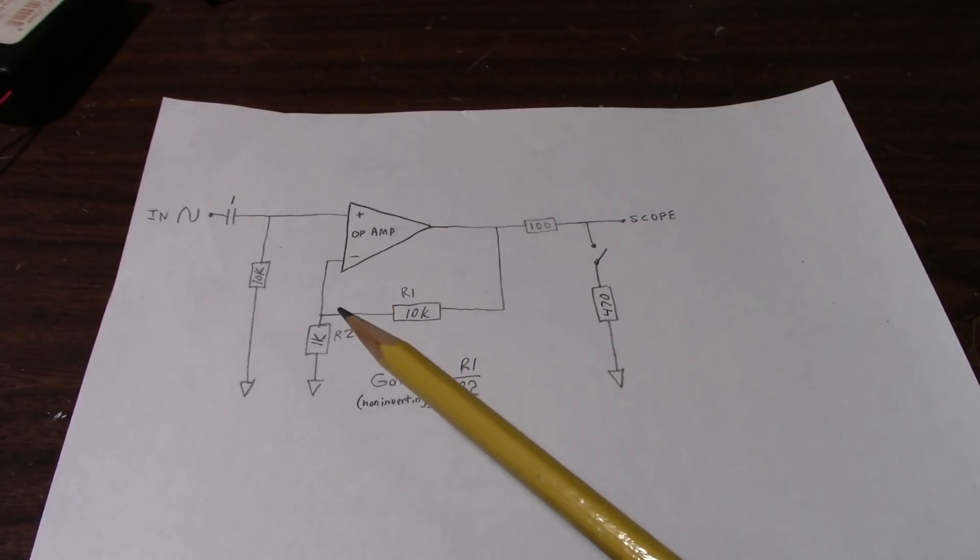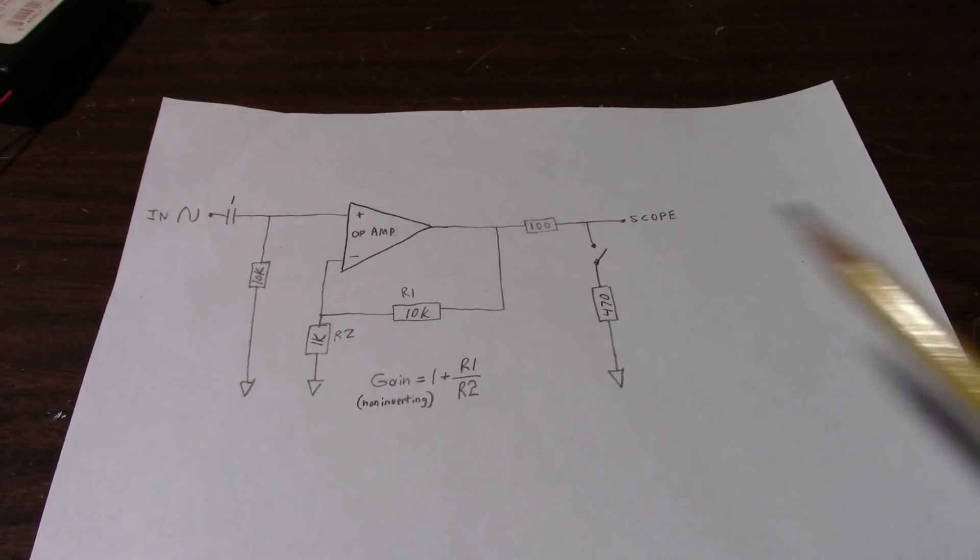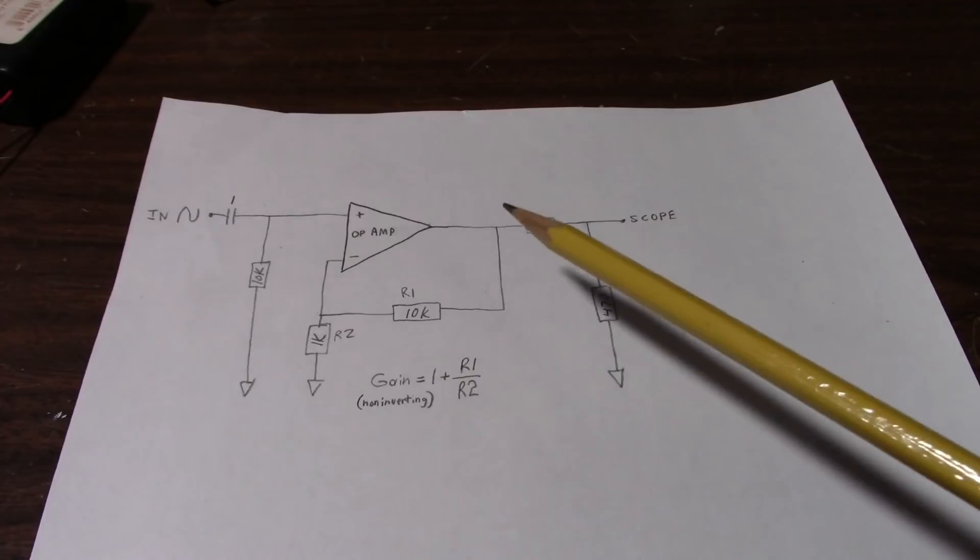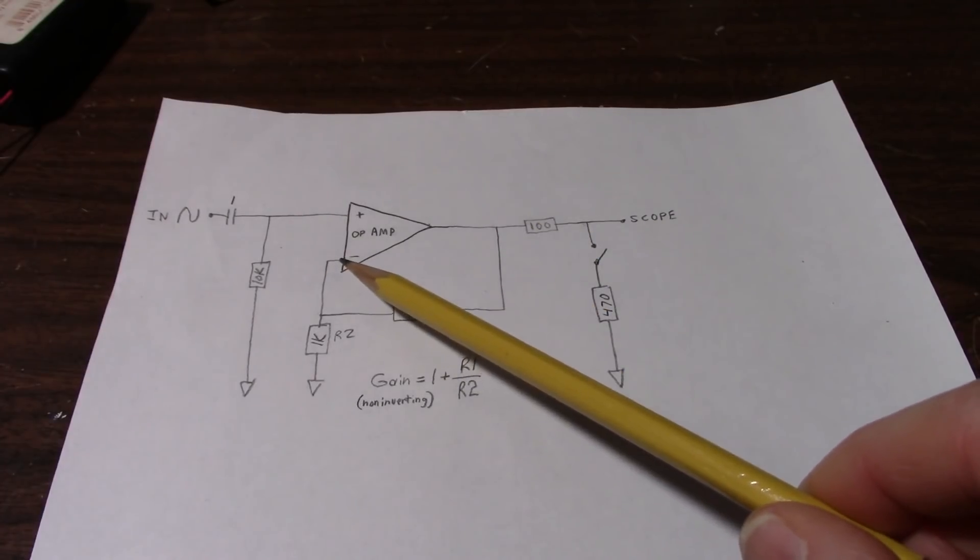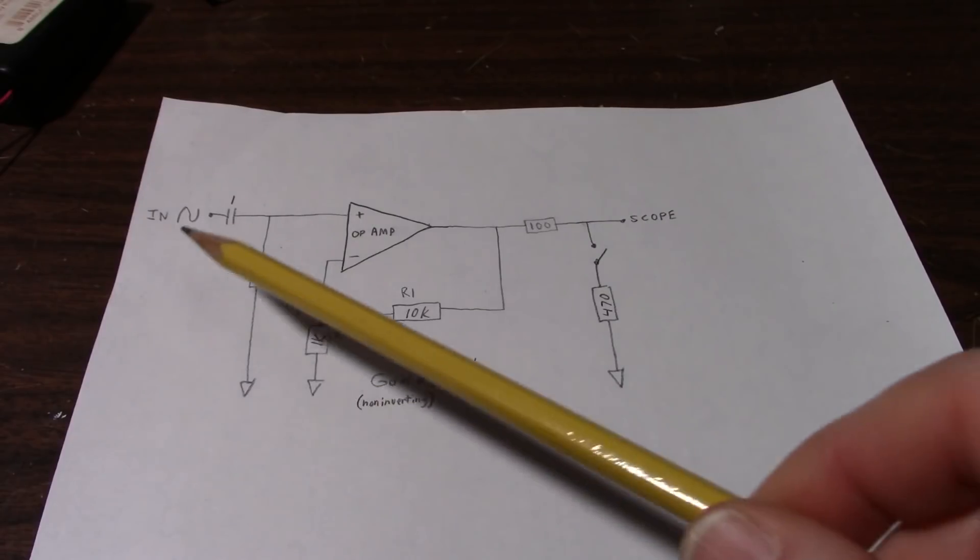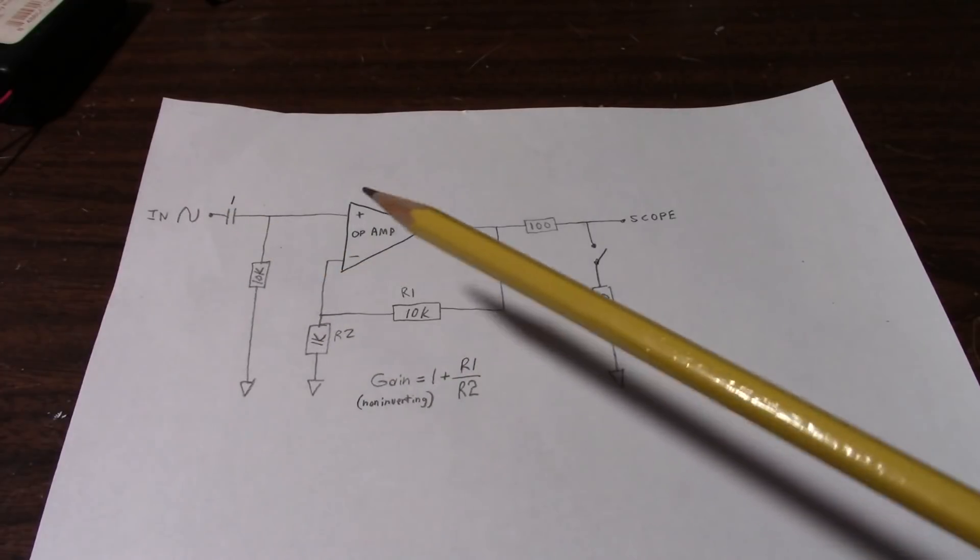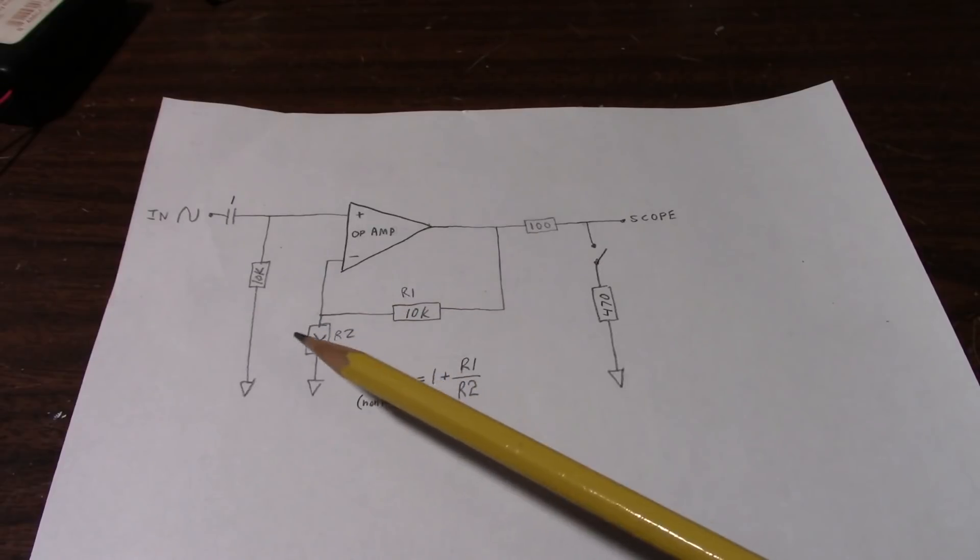So the voltage divider reduces the amount of signal that we're feeding back to the inverting input pin. If I didn't have any of these resistors and just connected a wire from the output back to the inverting input, the gain would just be 1, and we would call this circuit a buffer or a unity gain amplifier. But in many cases, we need to increase the amplitude of the signal. So we use a combination of these resistors to set the gain.